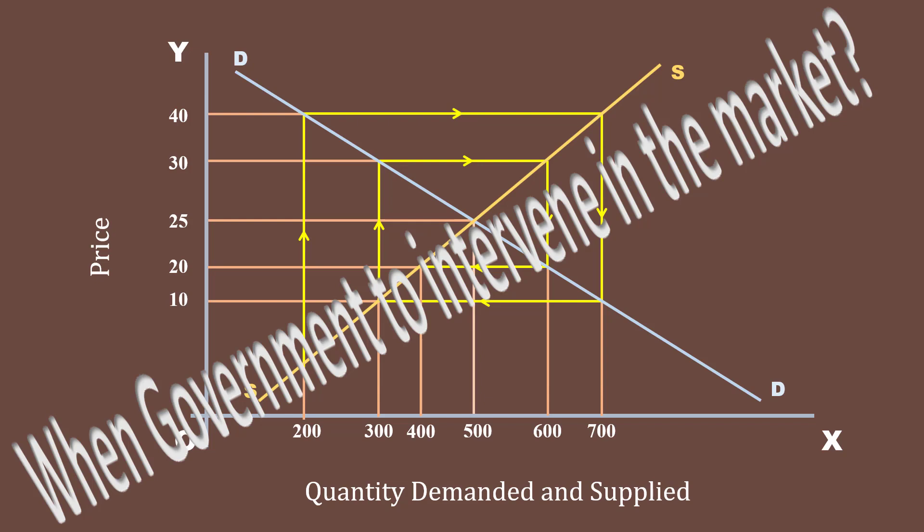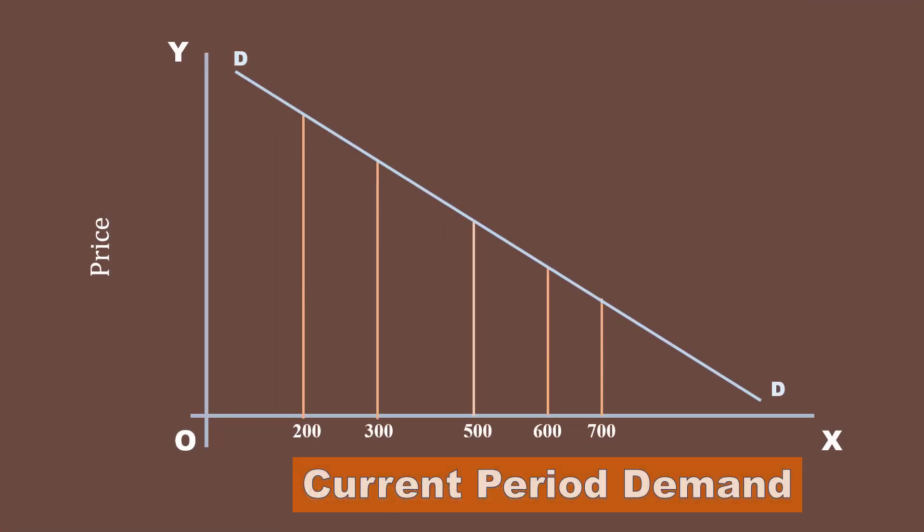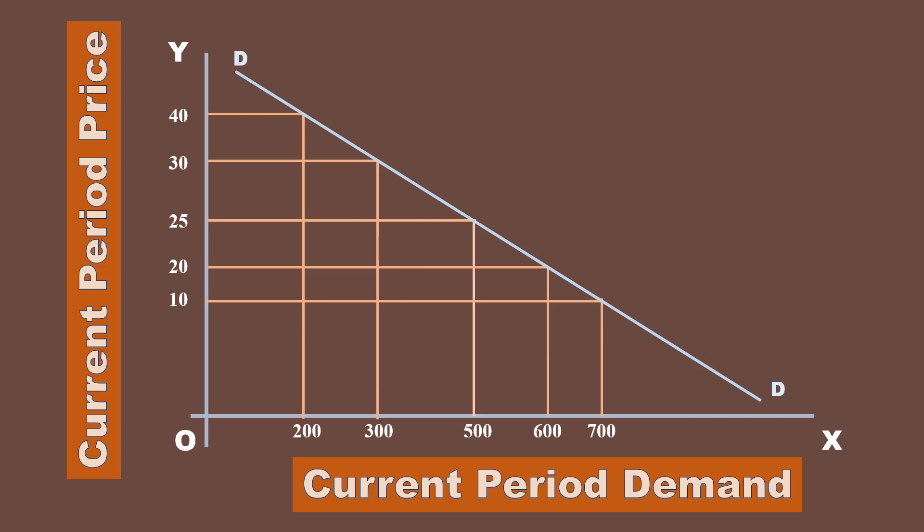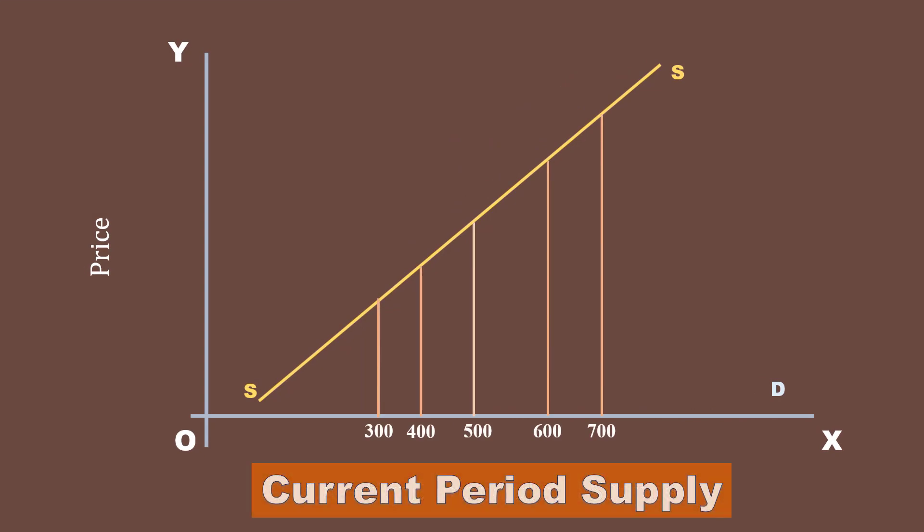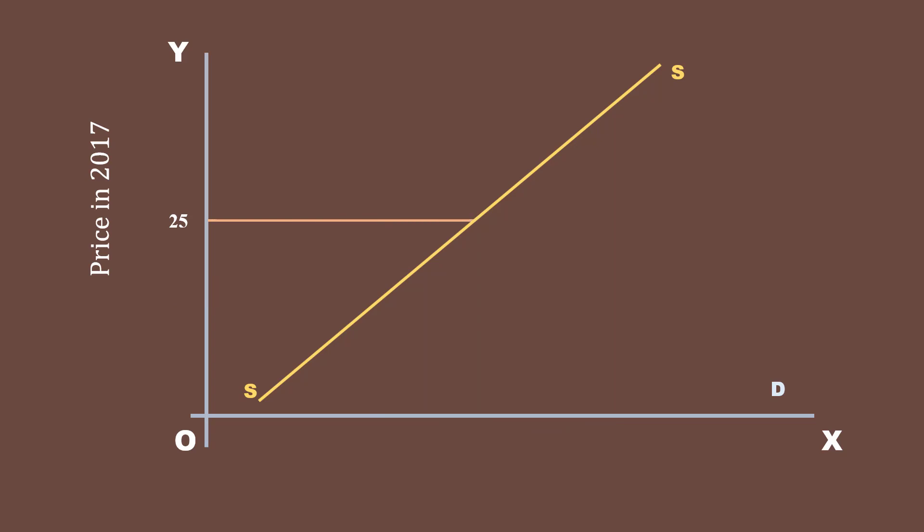At the very outset, let me make one thing very clear. According to Cobweb model, the current period demand is the function of current period price. But this is not true in case of supply. Current period supply is the function of previous period price. If there is a change in price in the current period, supply will adjust in the next period and not immediately. This is true in case of agricultural products and animal rearing. Let us use wheat market in our analysis.